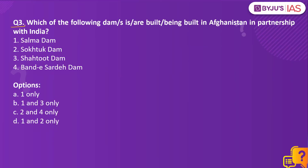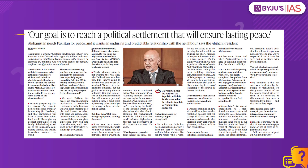Coming to question number 3. Which of the following dams is or are built or being built in Afghanistan in partnership with India? Number 1: Salma Dam. Number 2: Soktuk Dam. Number 3: Shatut Dam. Number 4: Band-e-Sarde Dam. An article in the Hindu newspaper today, which is an interview with the Afghanistan President, mentions Salma Dam as well as Shatut Dam.